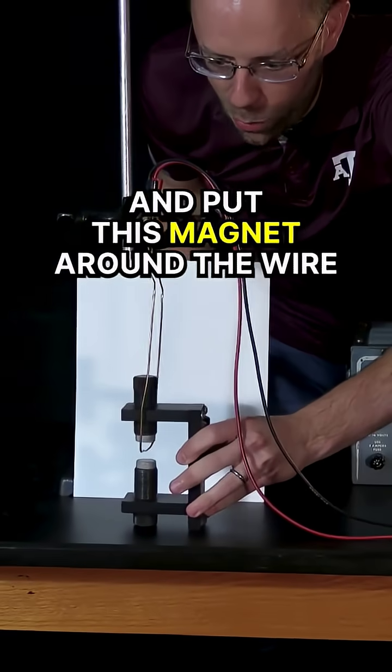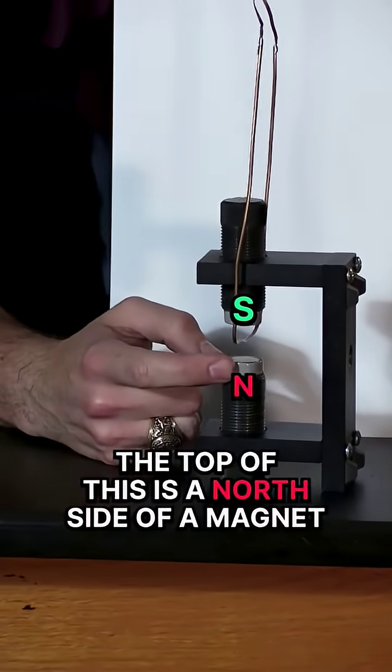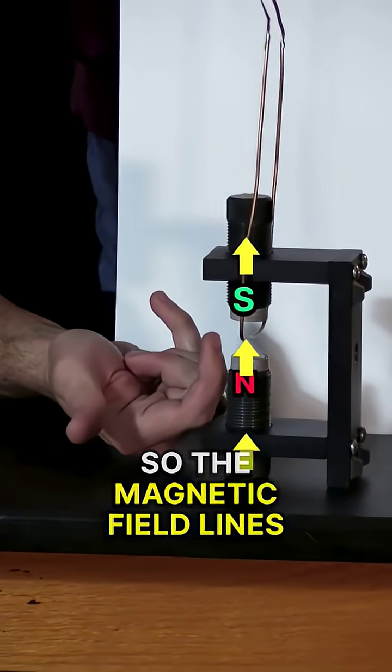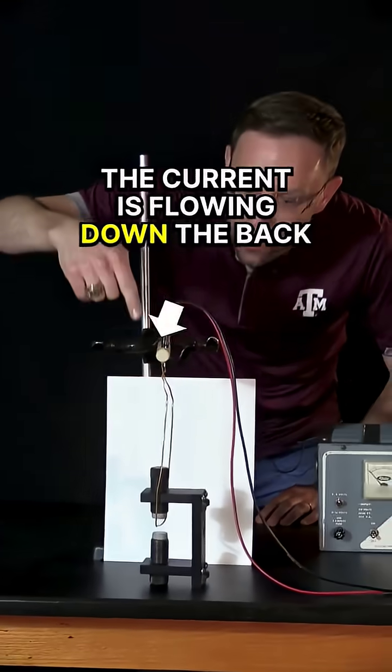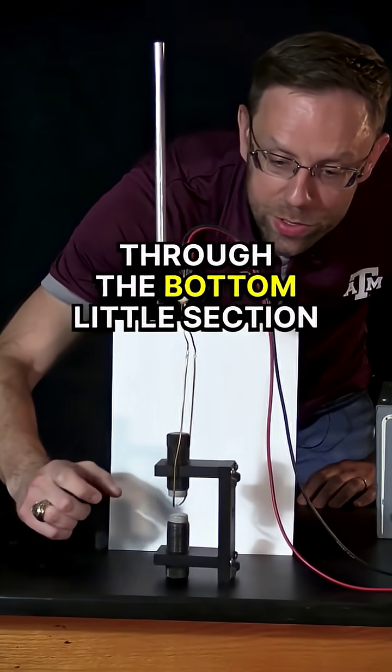So I'm going to go ahead and put this magnet around the wire. The bottom side of this is a south side of a magnet. The top of this is a north side of a magnet. So the magnetic field lines are pointing up. In this wire, the current is flowing down the back and pointing towards you through the bottom little section.